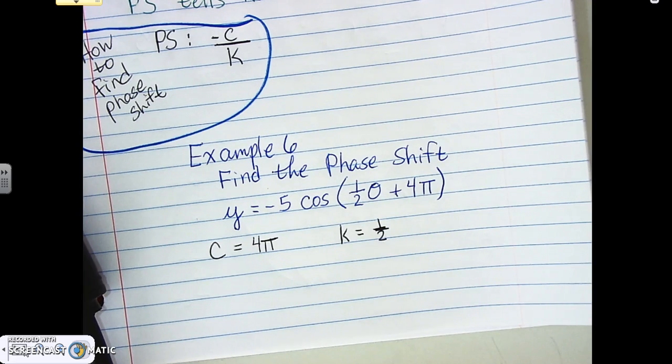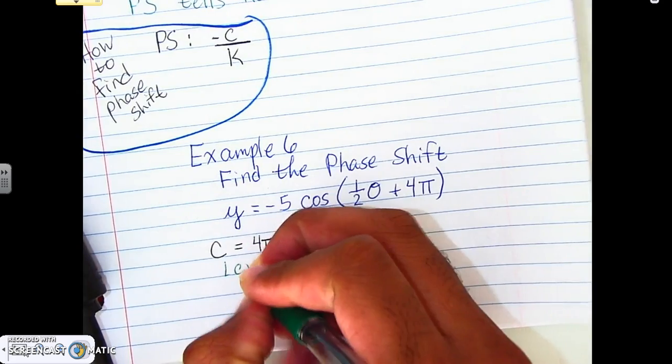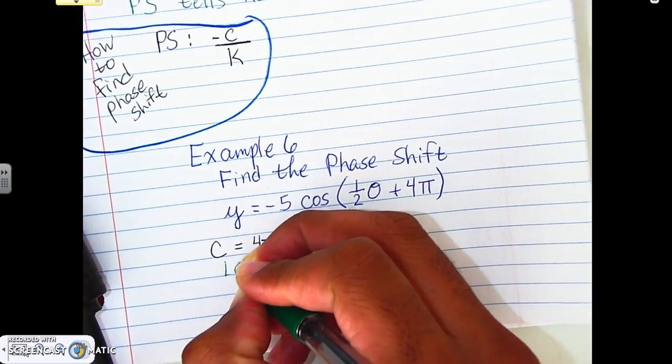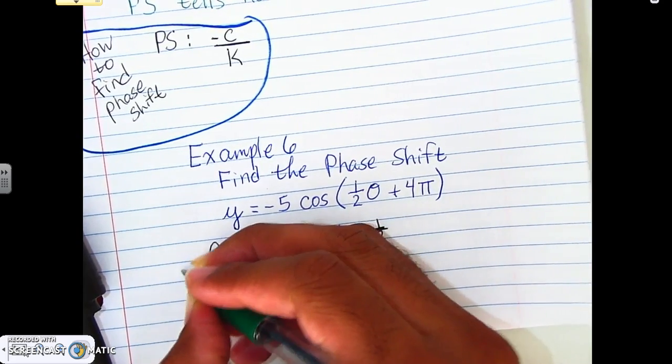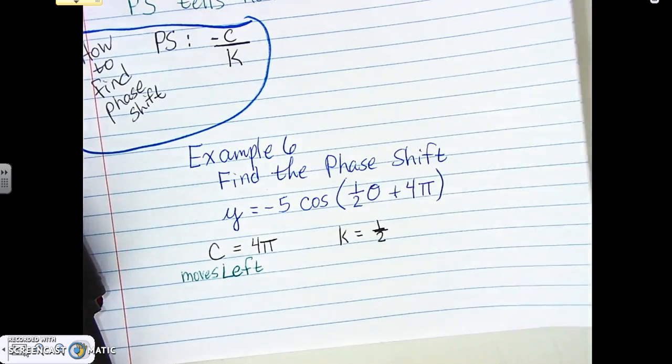So, we said if C is positive, it goes left. If C is negative, it goes right. So, just like we did when it came to our regular transformations, that part doesn't change. So, since this is a positive C, it goes left. So, this graph, or this function, is going to move left. And then, again, the phase shift is going to tell us how far left.